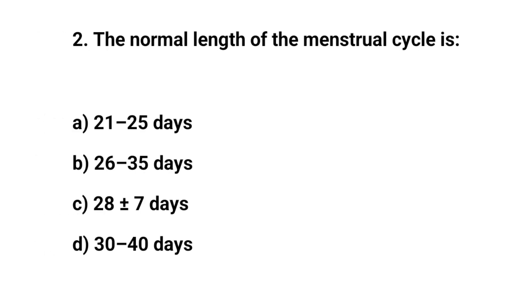Question No. 2. The normal length of the menstrual cycle is? Right answer is C: 28 ± 7 days.